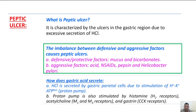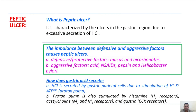Peptic ulcer is characterized by ulcers in the gastric region due to excessive secretion of HCl. Peptic ulcers are formed due to imbalance between defensive and aggressive factors. Defensive factors are the factors that decrease acid levels — examples are mucus and bicarbonates. Aggressive factors are the factors that increase acid levels — examples are acid, NSAIDs, pepsin, and Helicobacter pylori.